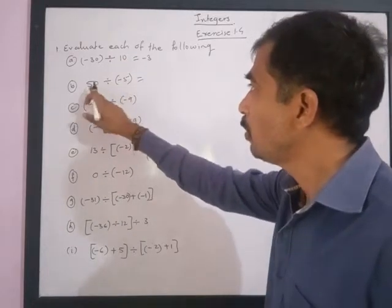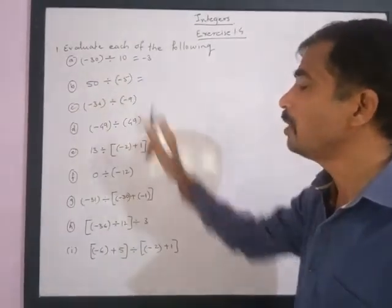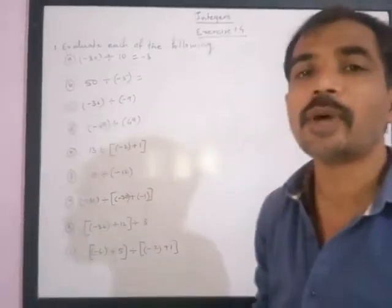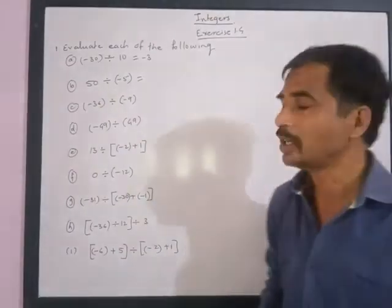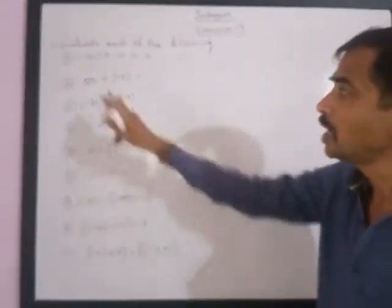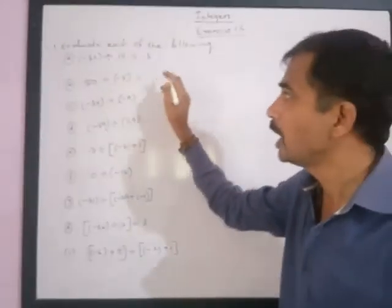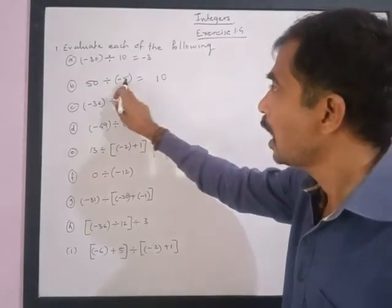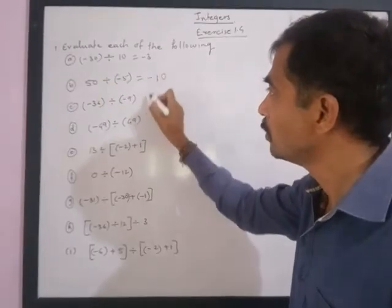Next, if a positive integer is divided by a negative integer, we divide the whole number by the whole number and give a negative sign. So here, if 50 is divided by 5, we get 10, and we give the negative sign.